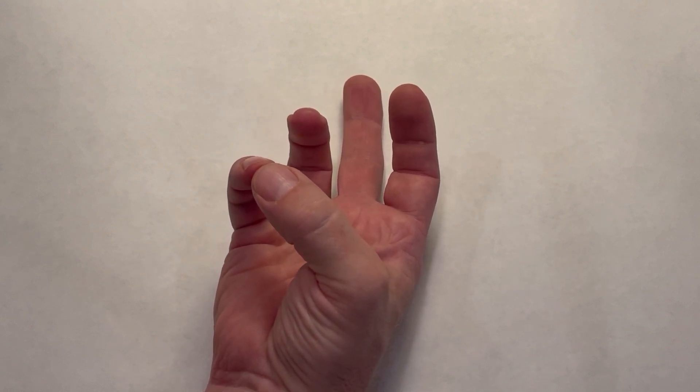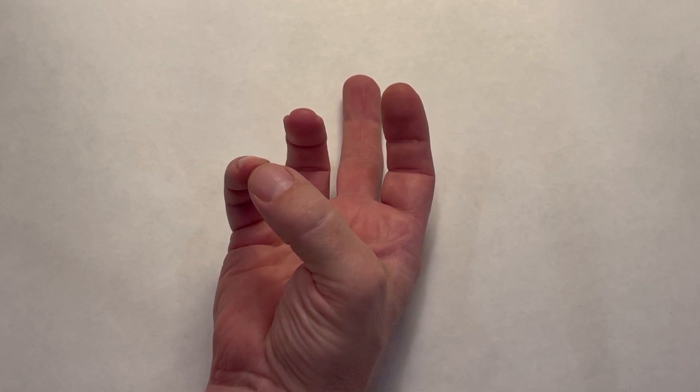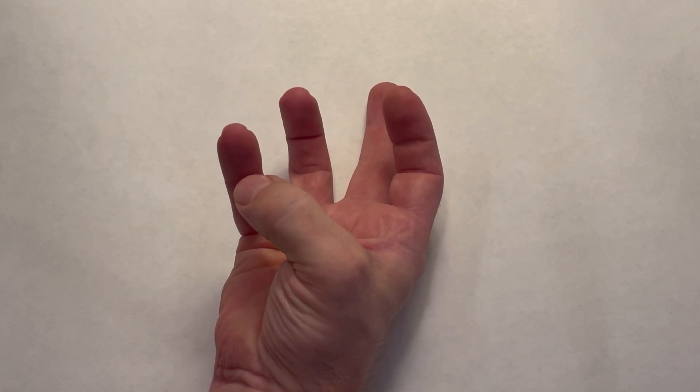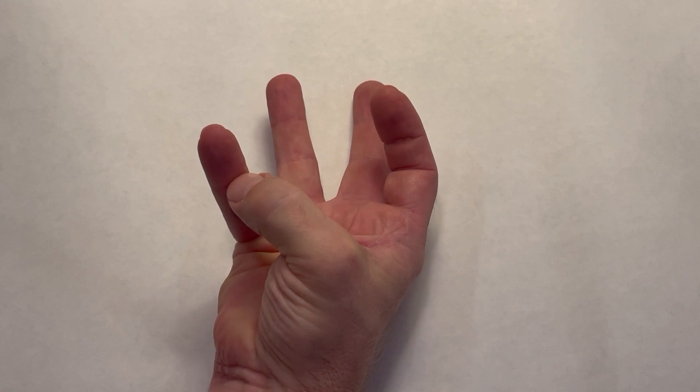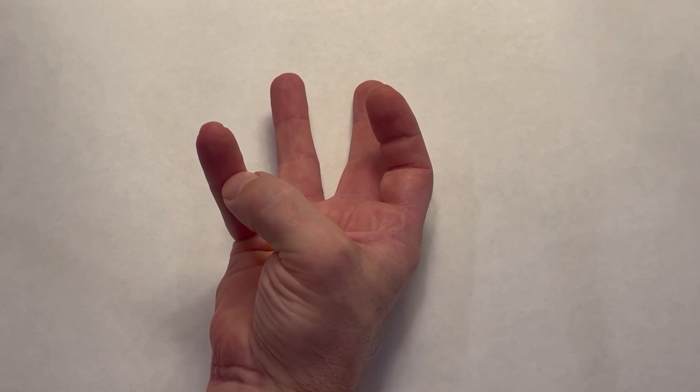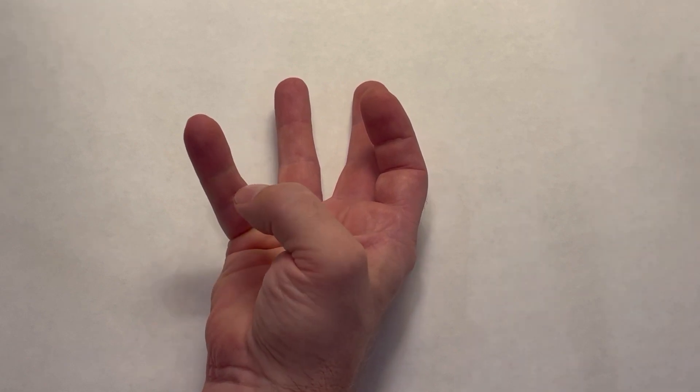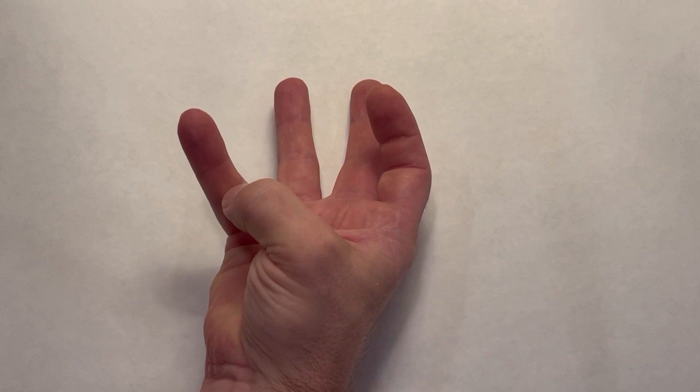And then we work our way down the small finger. So stage 7 is the thumb tip or thumb pad to the small finger distal interphalangeal crease. Stage 8 is the thumb to the proximal interphalangeal crease of the small finger.